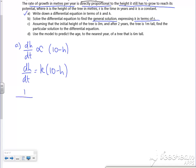h on the left, so 1 over (10-h) dh equals k dt. Just stick the integral signs in front of it.